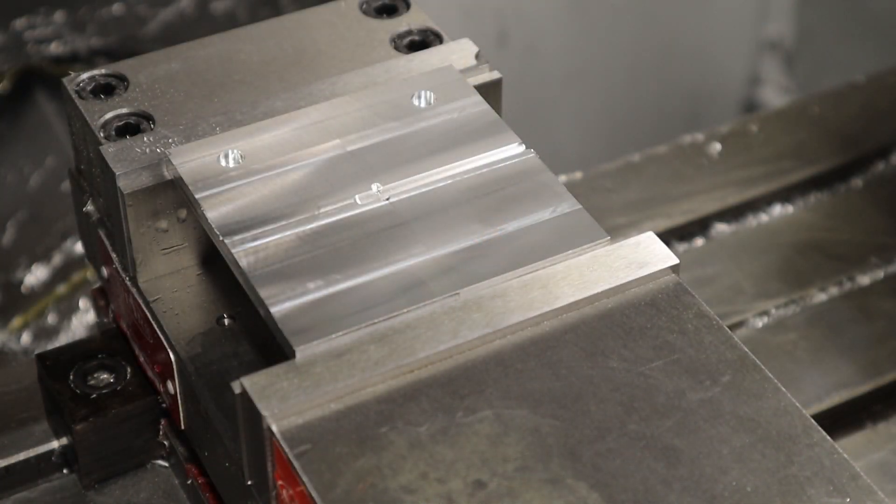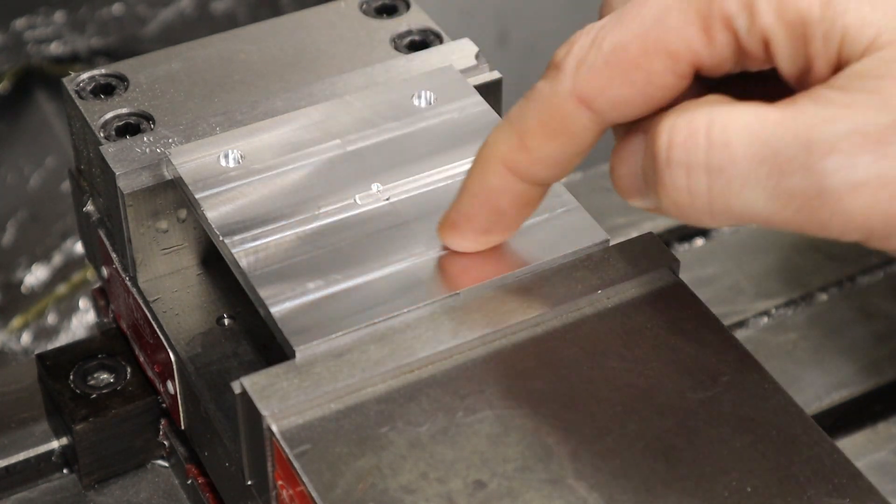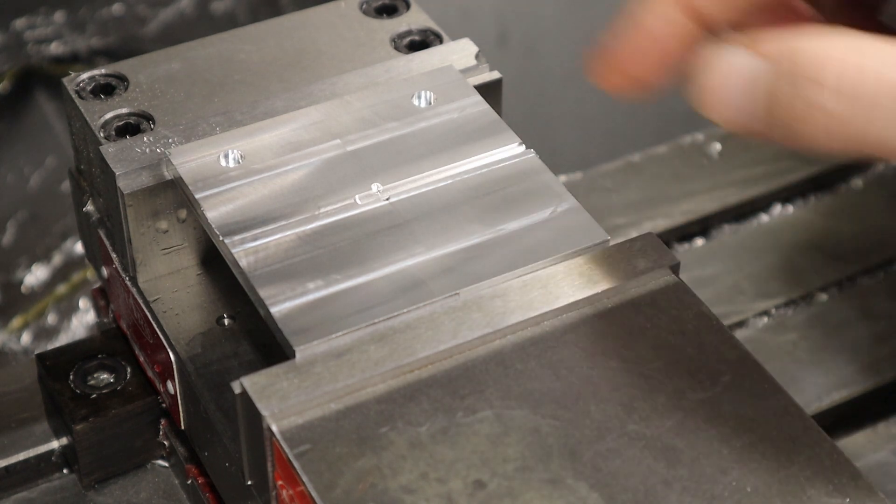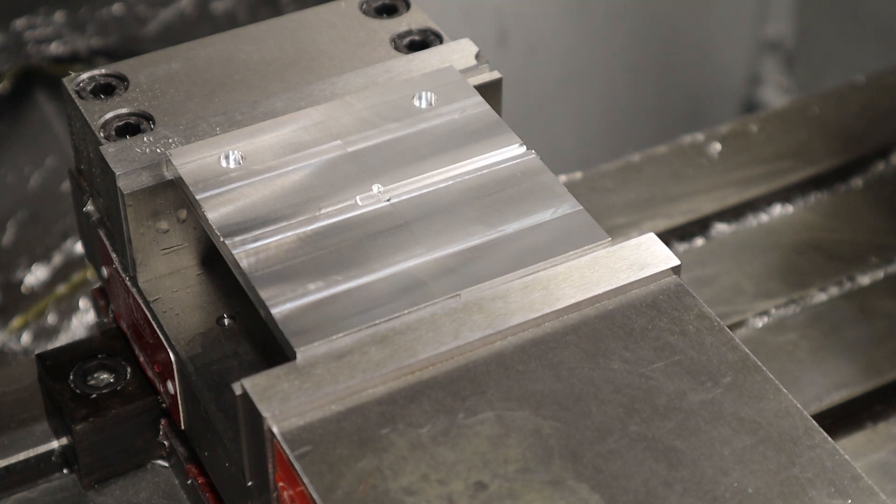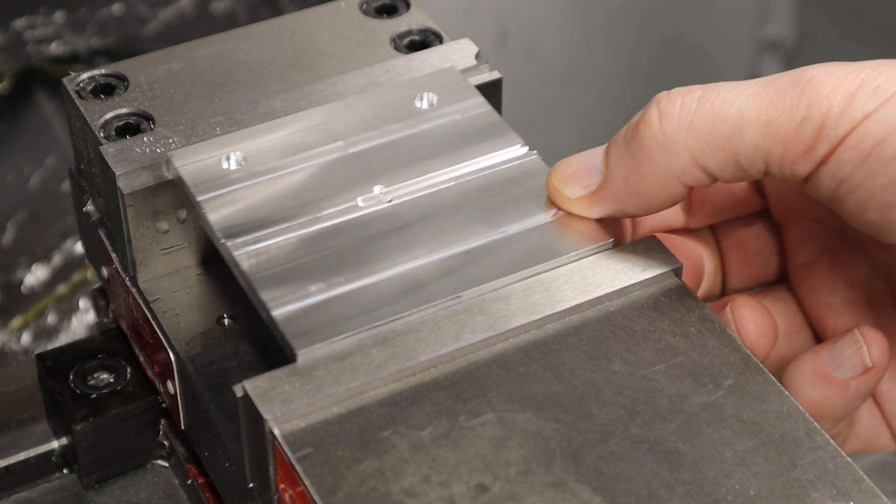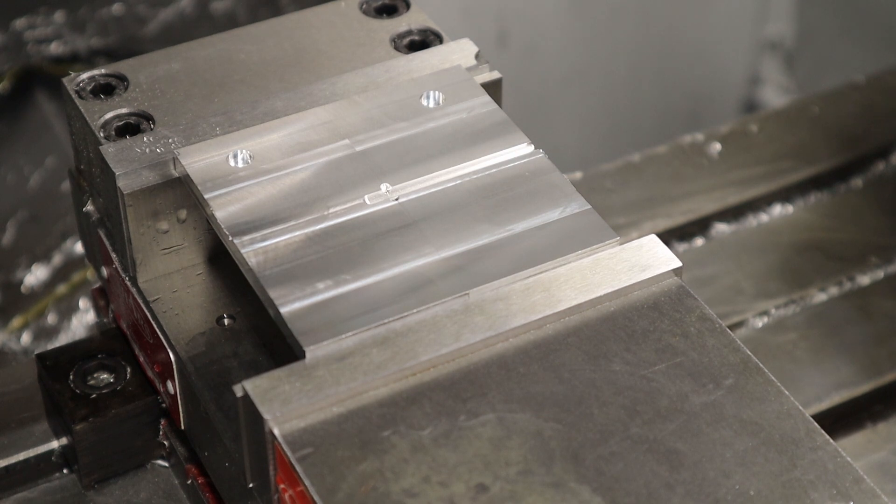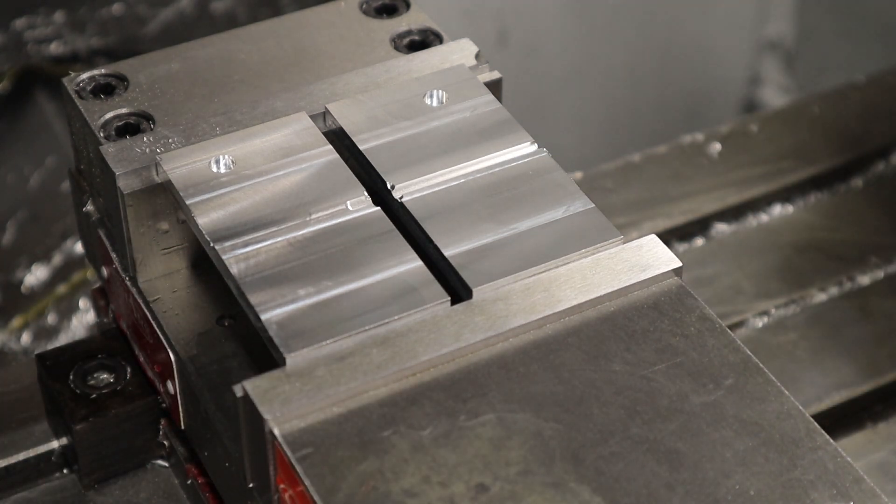This is what it looks like when it's done. I can see the line between them, but it looks pretty much perfect. So I'm going to loosen this up, the vise that is. Look at that. The coolant is causing them to stick together. There we go. Perfect.